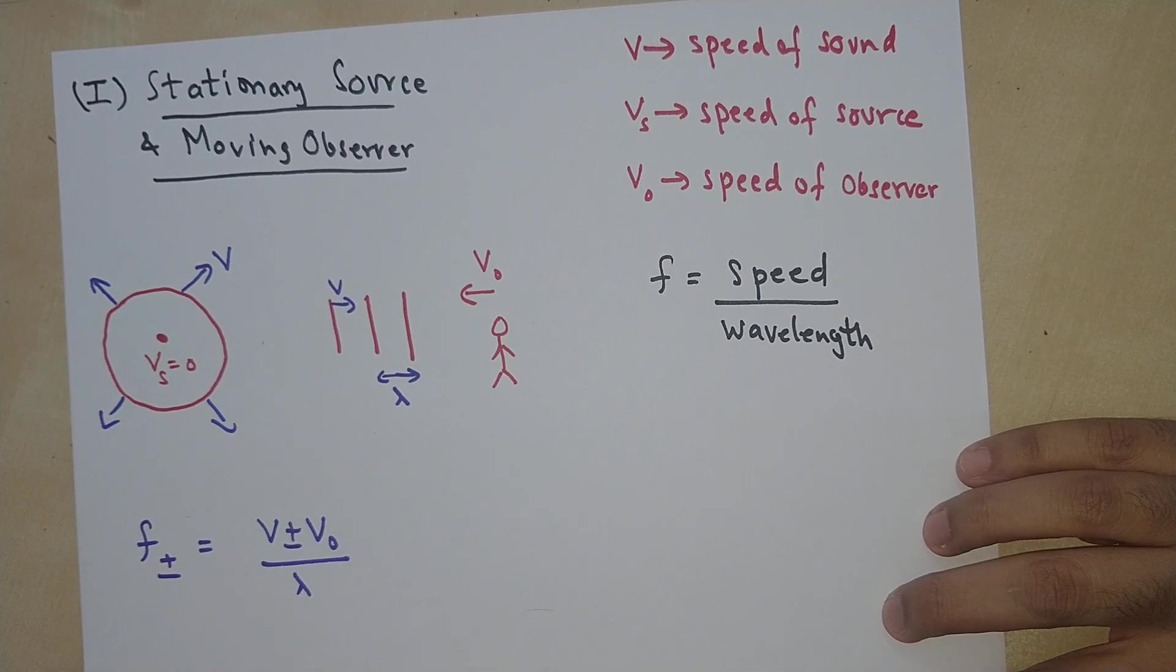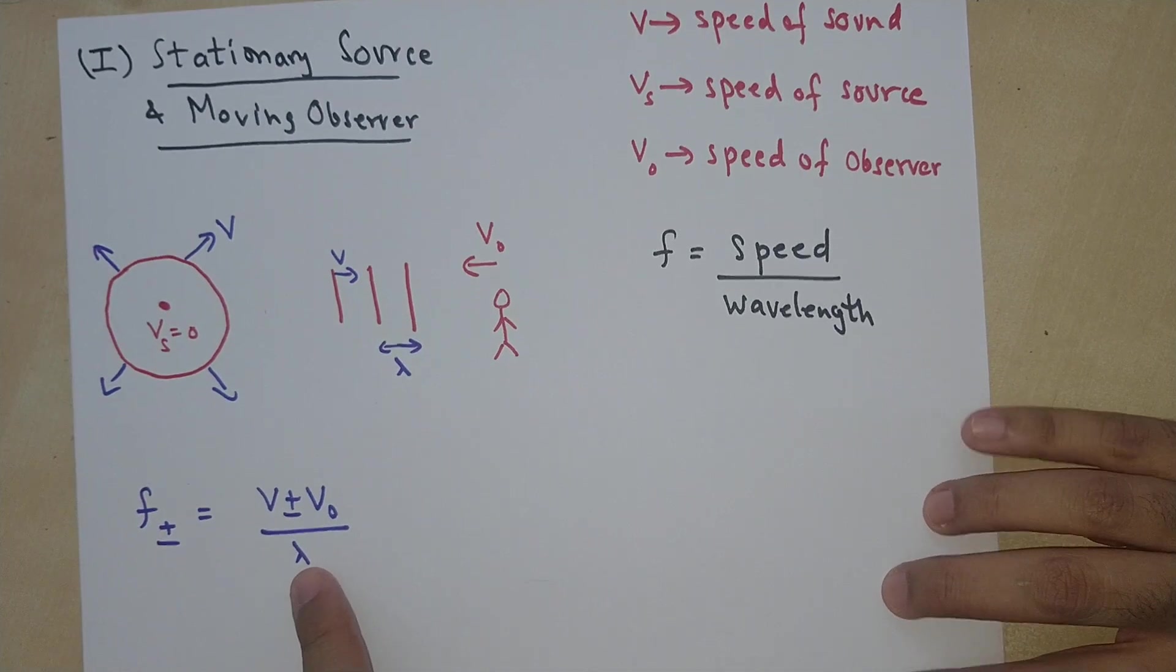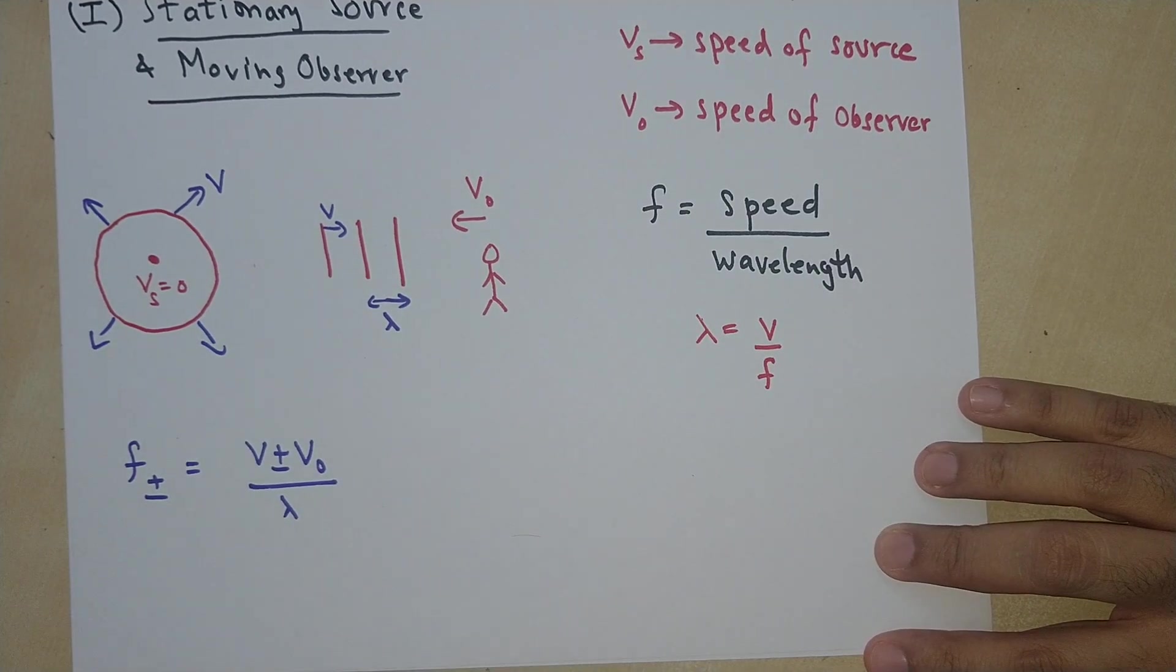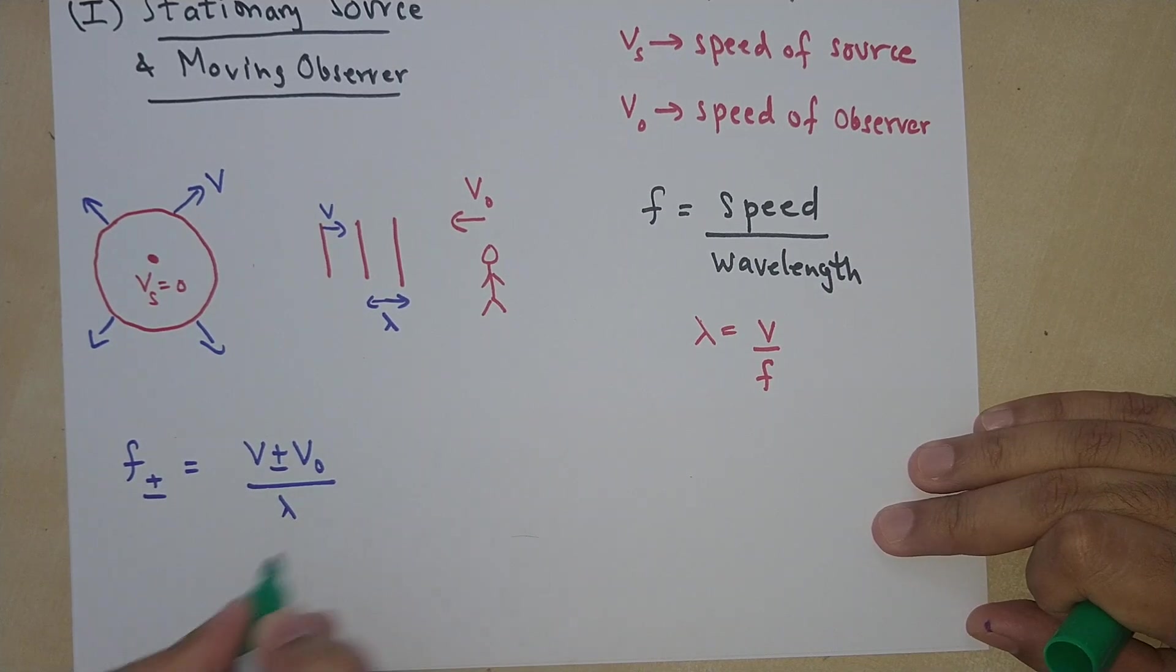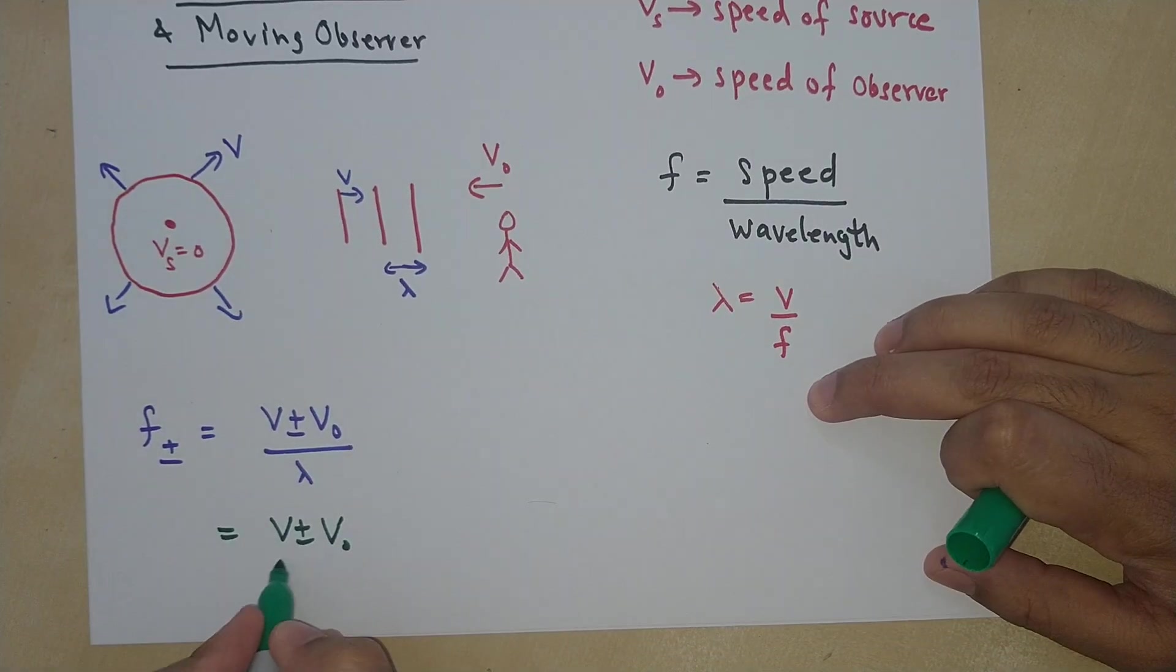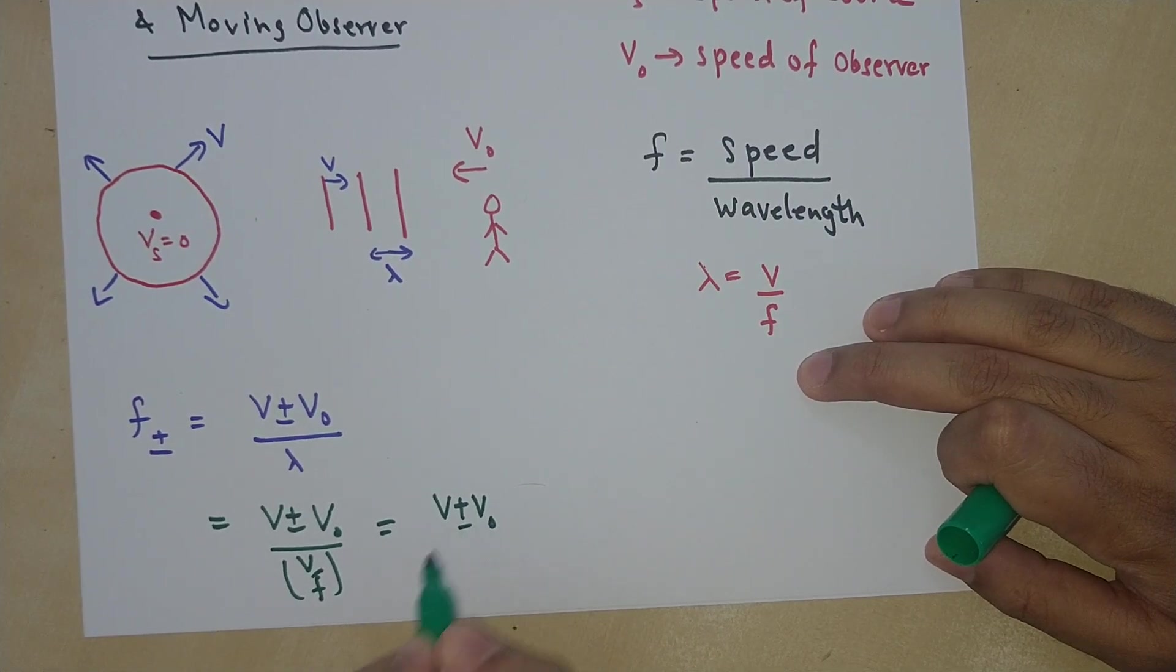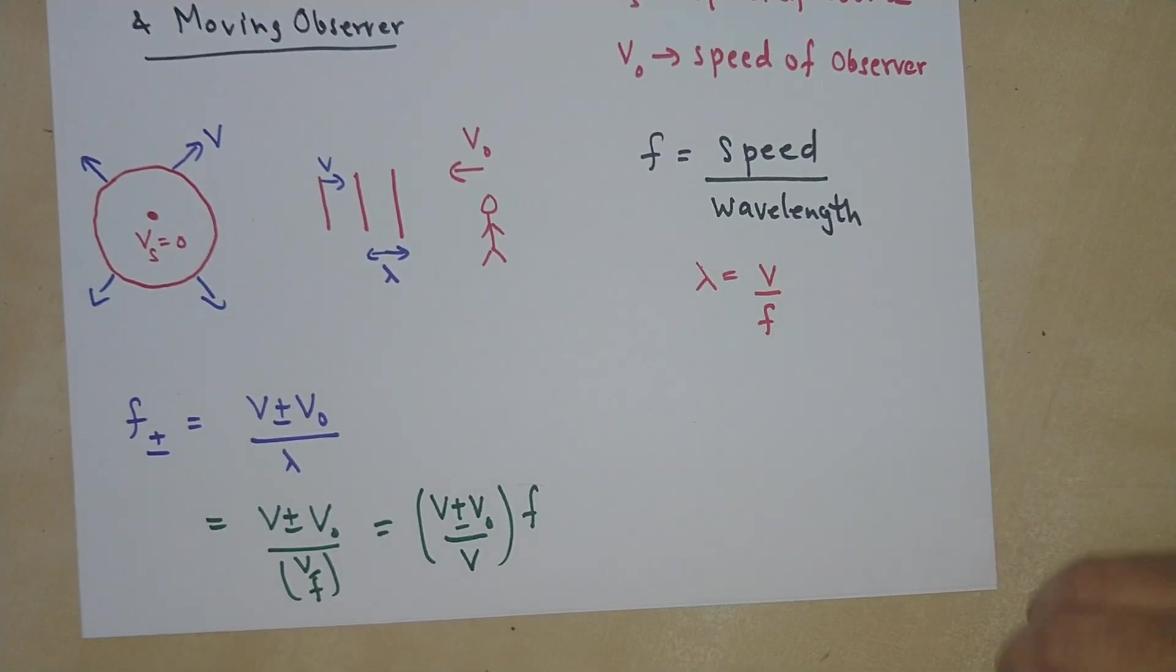And if you remember that lambda is the wavelength of the sound wave, it's gonna be V over F. So lambda is V divided by F. Let's plug that in over here. So you get V plus minus V sub O divided by V over F. So the F multiplies with the numerator. You get V plus minus V sub O times F divided by V.